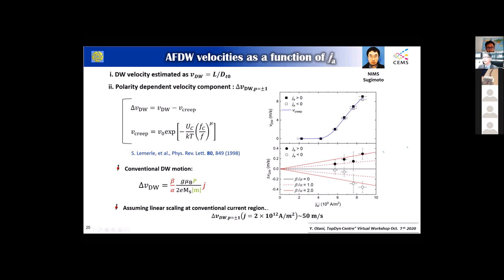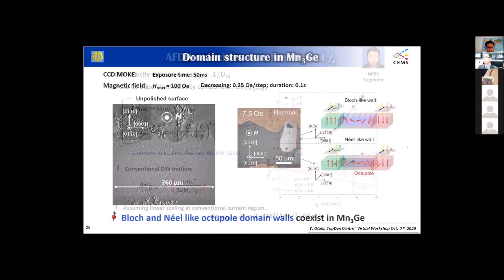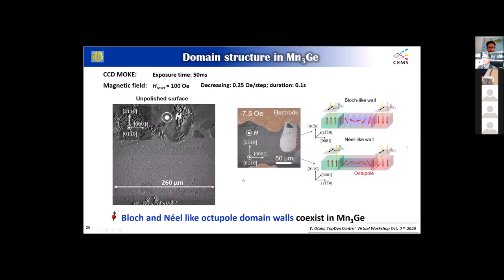I'd like to say a few words: we recently started using Mn3Ge and measured the domain structure. This is an electrode and we measured the Hall effect, top and bottom. We can clearly see domain nucleation and propagation — as you can see here, the domain is nucleated, propagates, and they combine with each other. We are now trying to make this sample much smaller, and then study a single domain wall or a much simpler structure.